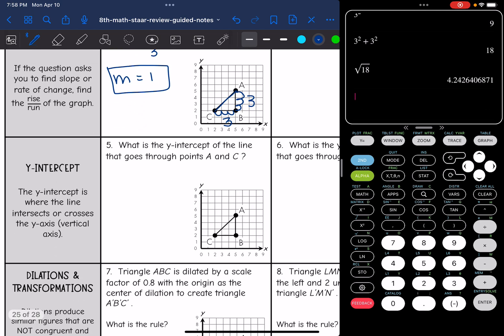They might also ask you about the y-intercept. Remember, that's where the line intersects or crosses the y-axis. This one says, what is the y-intercept of the line that goes through points A and C? So I'm just going to extend the line through those points until it intersects the y-axis. And it looks like it crosses at the origin, so my y-intercept would be zero.